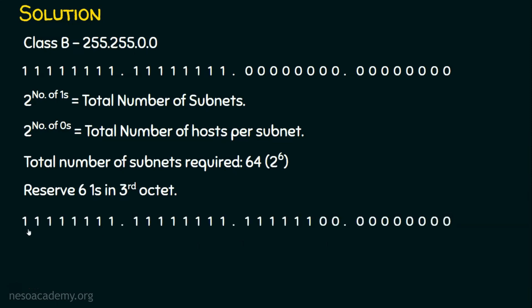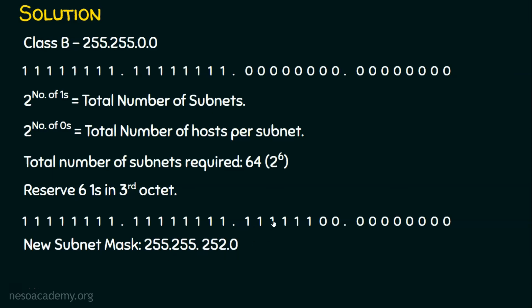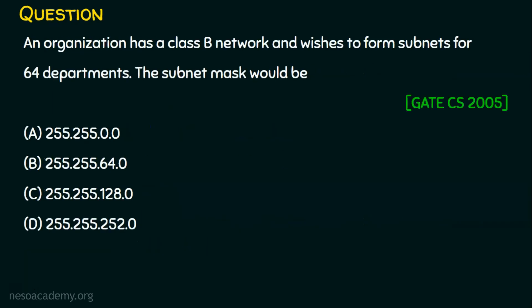After reserving 6 ones in the subnet mask, we obtain the new subnet mask. Converting that binary back to decimal gives us 255.255.252.0. So the right answer is Option D: 255.255.252.0.